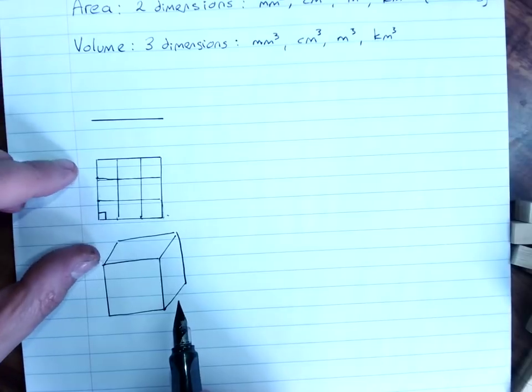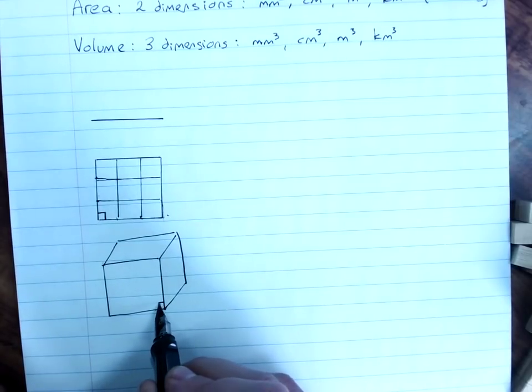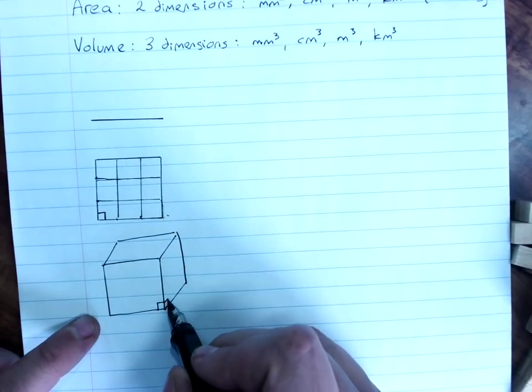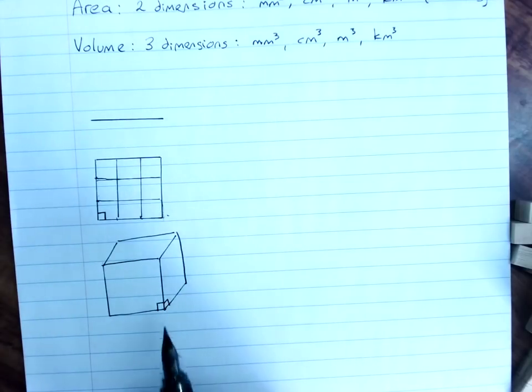So, the two dimensions we're dealing with for area are at right angles, and in the cube, that's right angles there, and that's also right angles there. So, the three dimensions are all at right angles to each other.